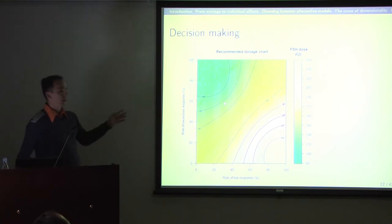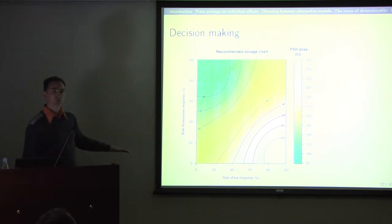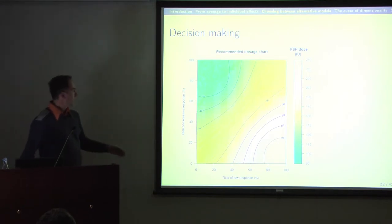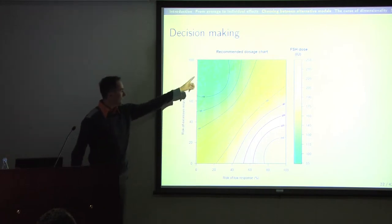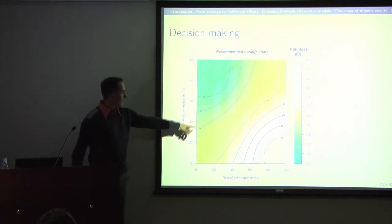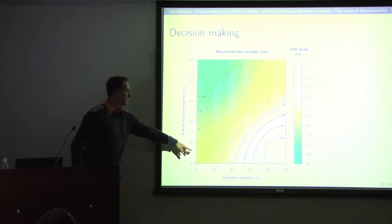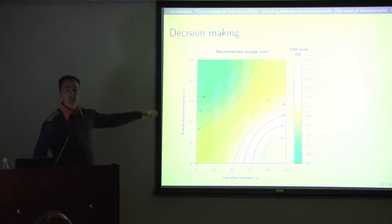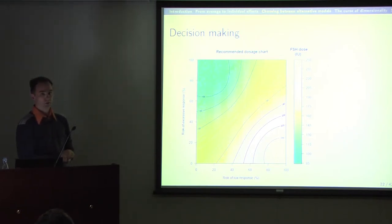The results can be summarized in a diagram with risk of low response on the x-axis and risk of excessive response on the y-axis. The standard dose of 150 corresponds to the middle region, roughly yellow. Depending on the predicted risk, the individual patient would move away from the standard dose. That is individualized treatment.